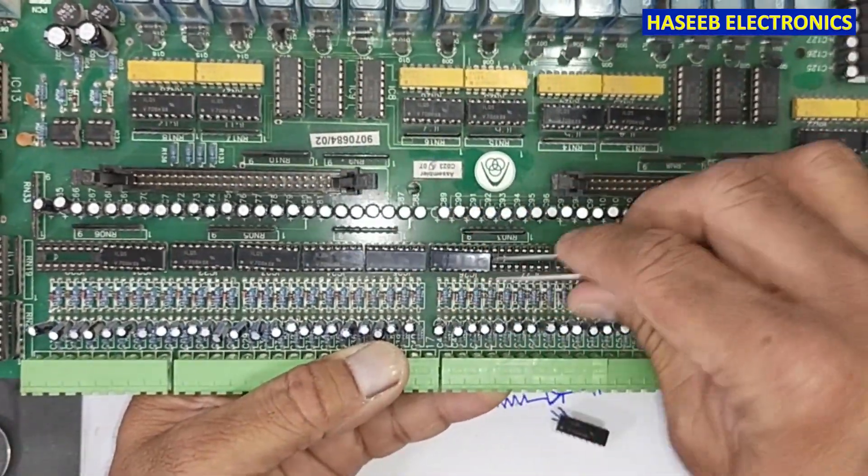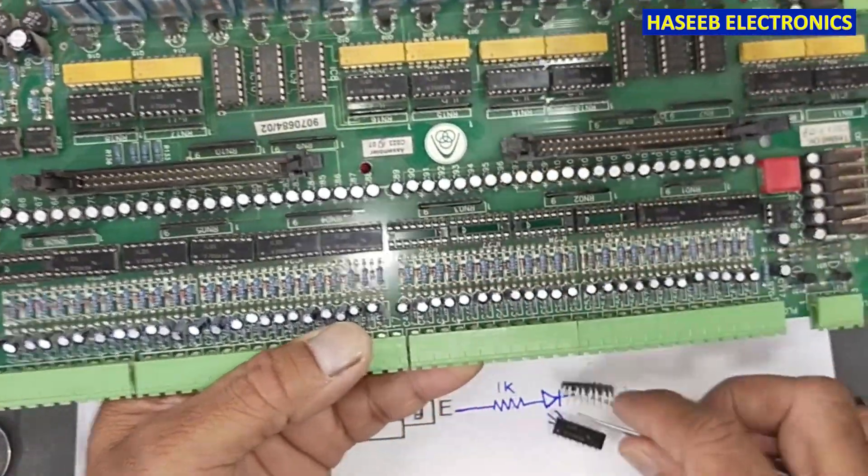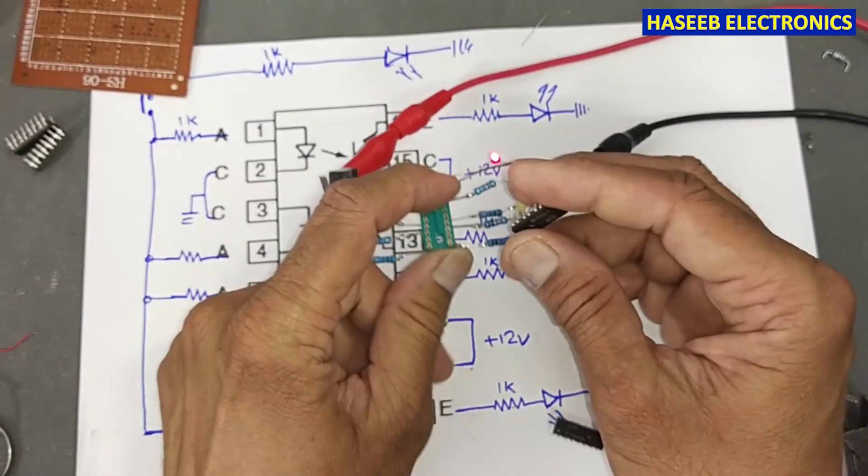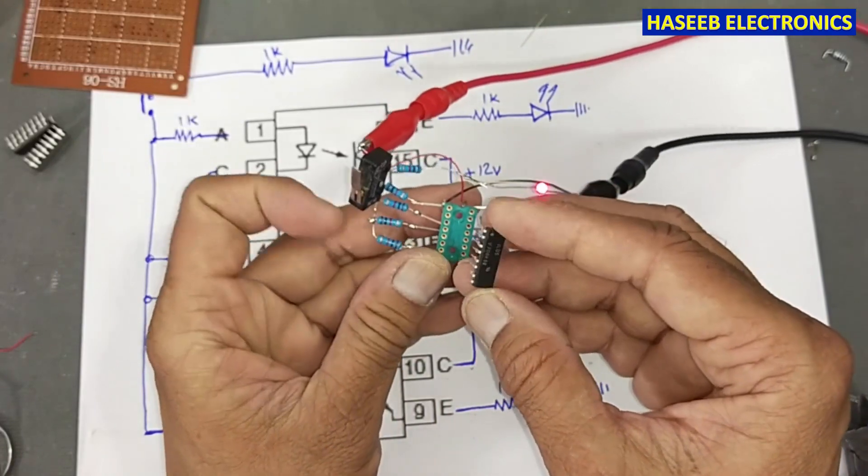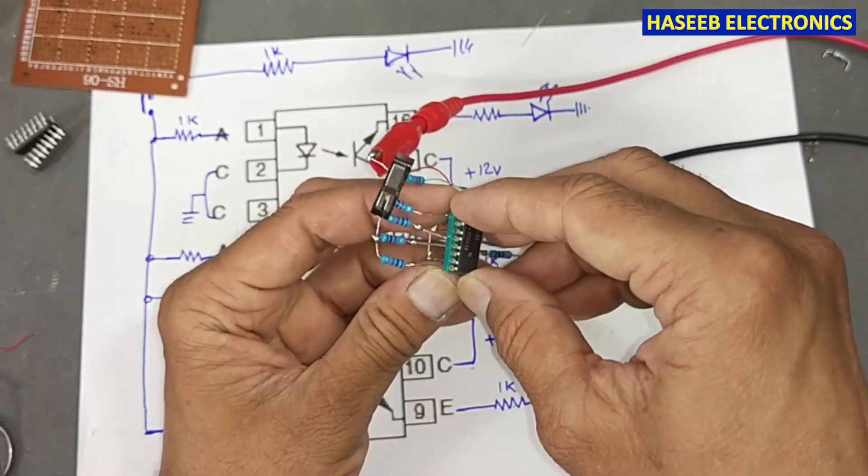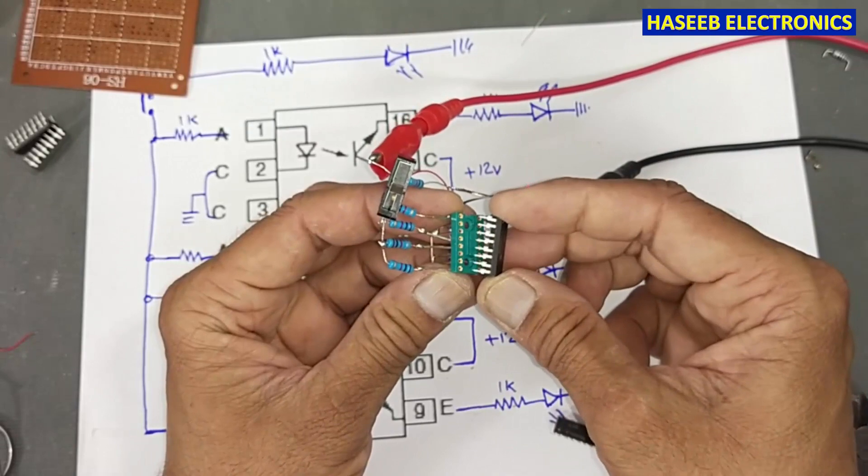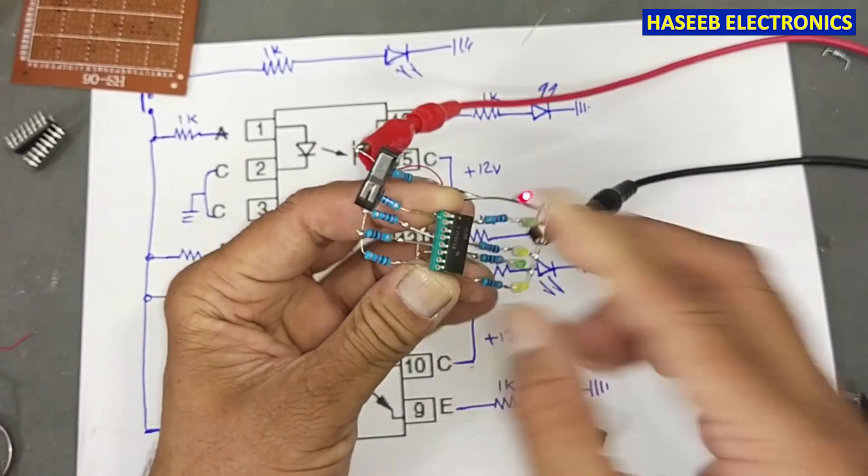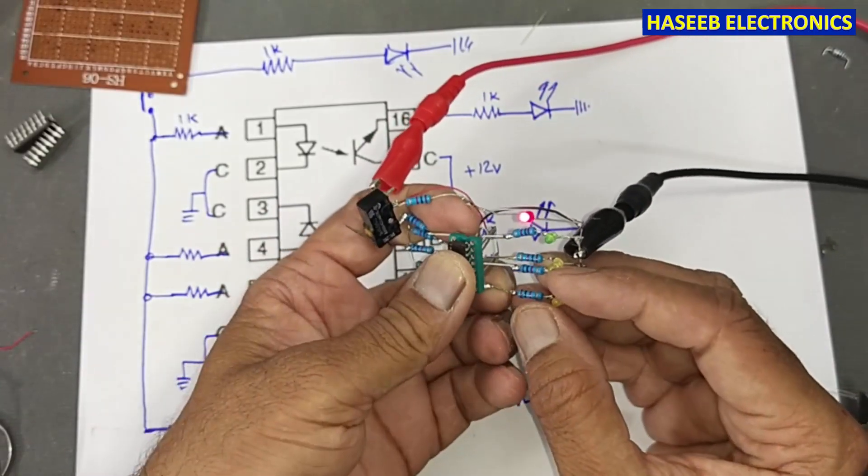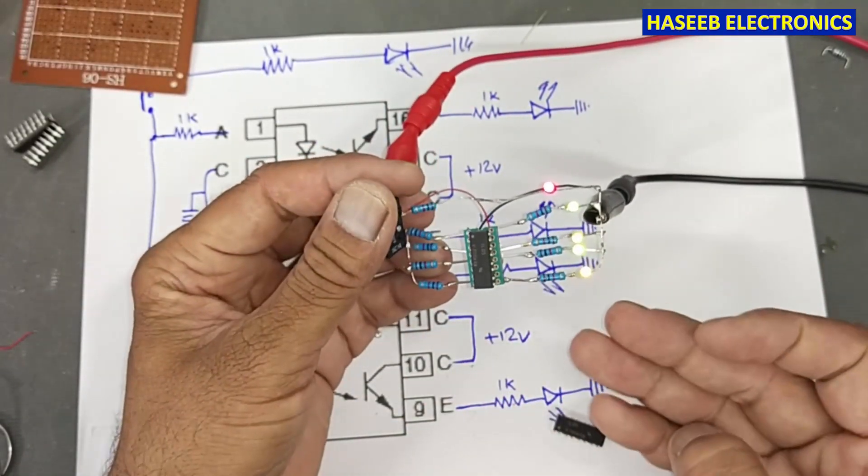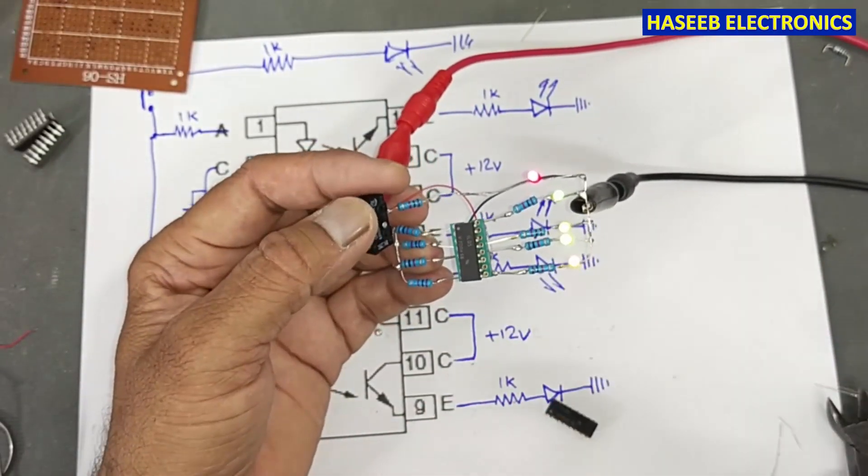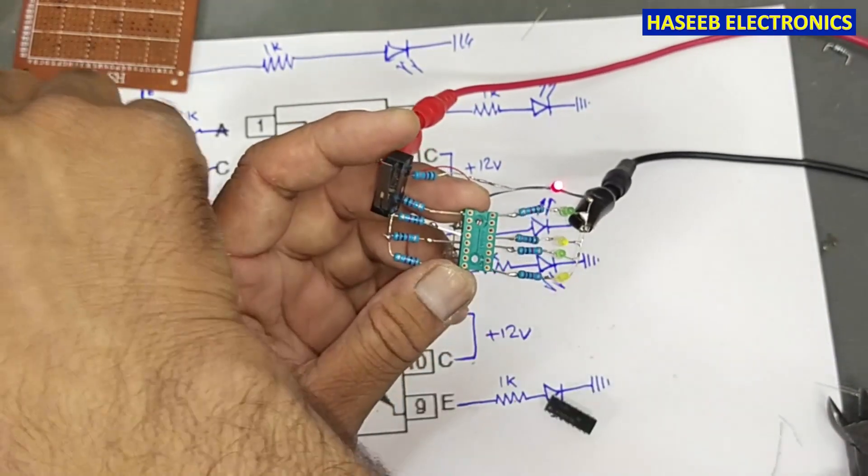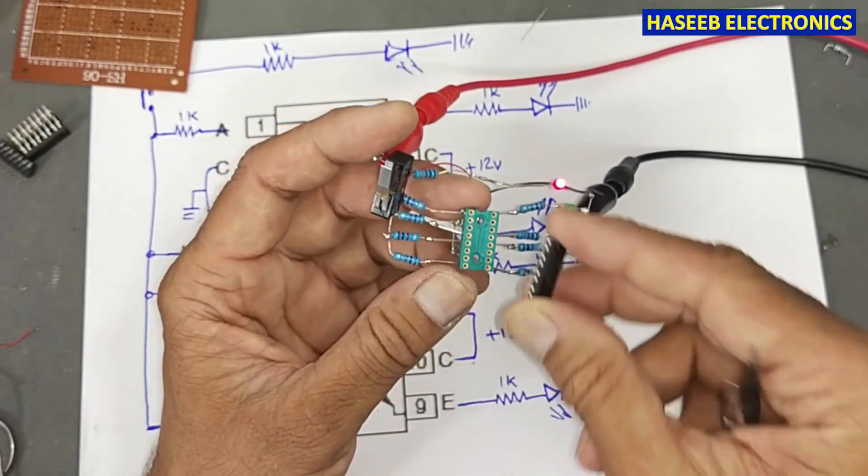Let's check the other two ICs here. Last time I removed five ICs and found three unserviceable. This one is good. Okay, this IC is good. I will remove it and now we will test this IC.